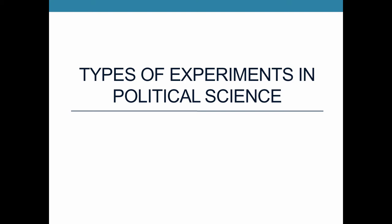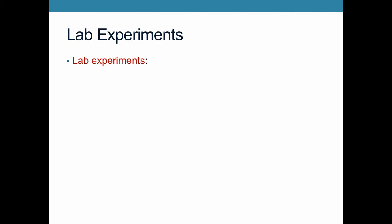In this lecture I'm going to outline three different types of experiments that we see in political science. The first type of experiment are experiments that happen in labs — lab experiments — and in lab experiments, subjects are recruited to a common location.